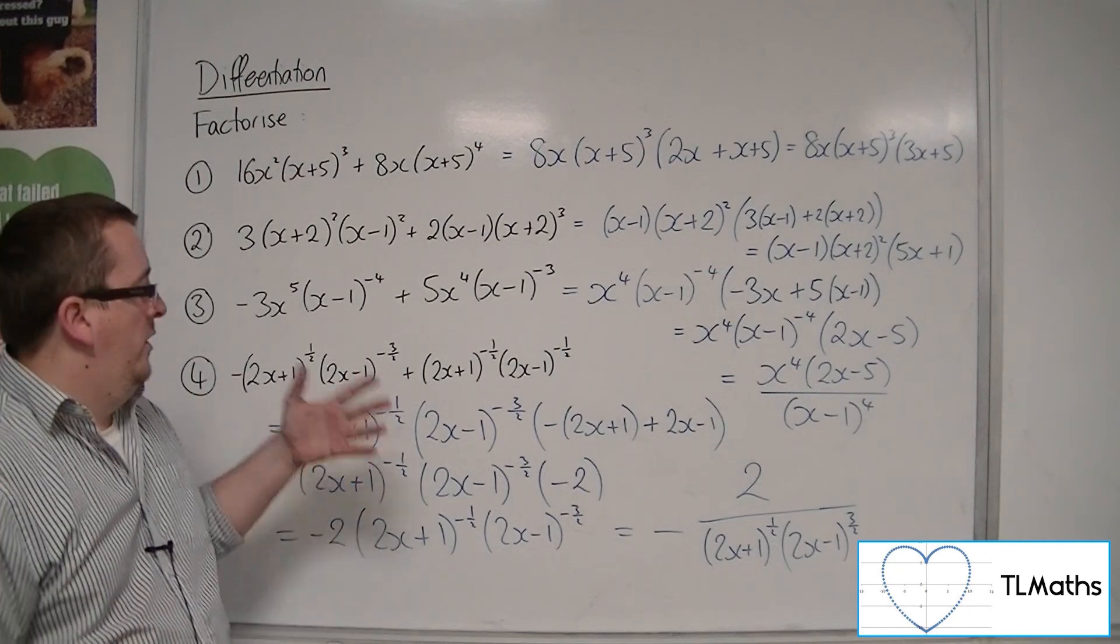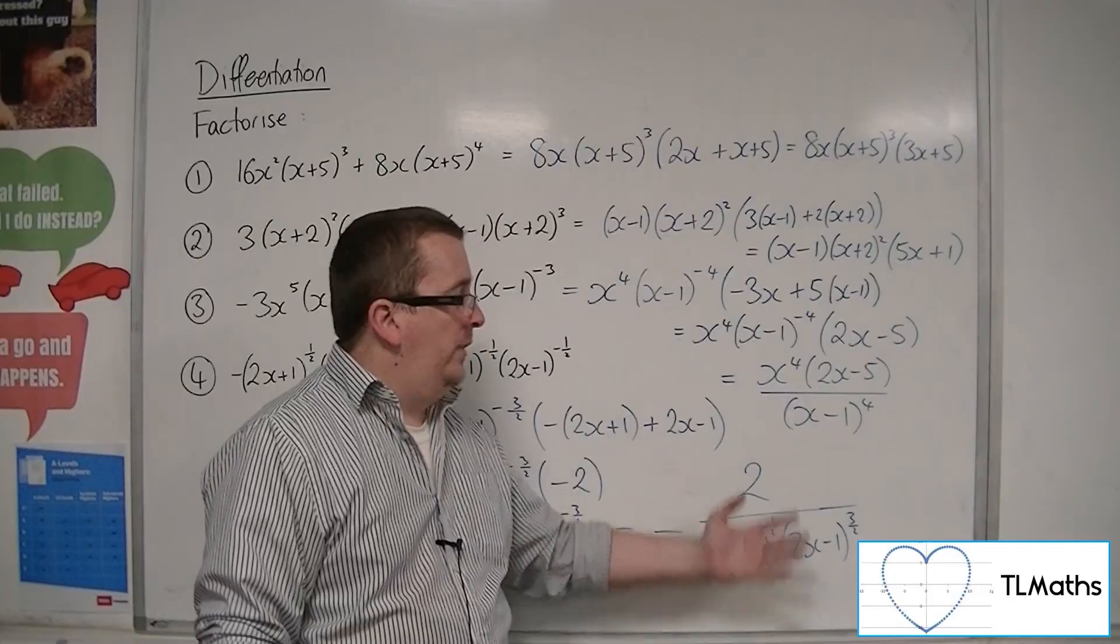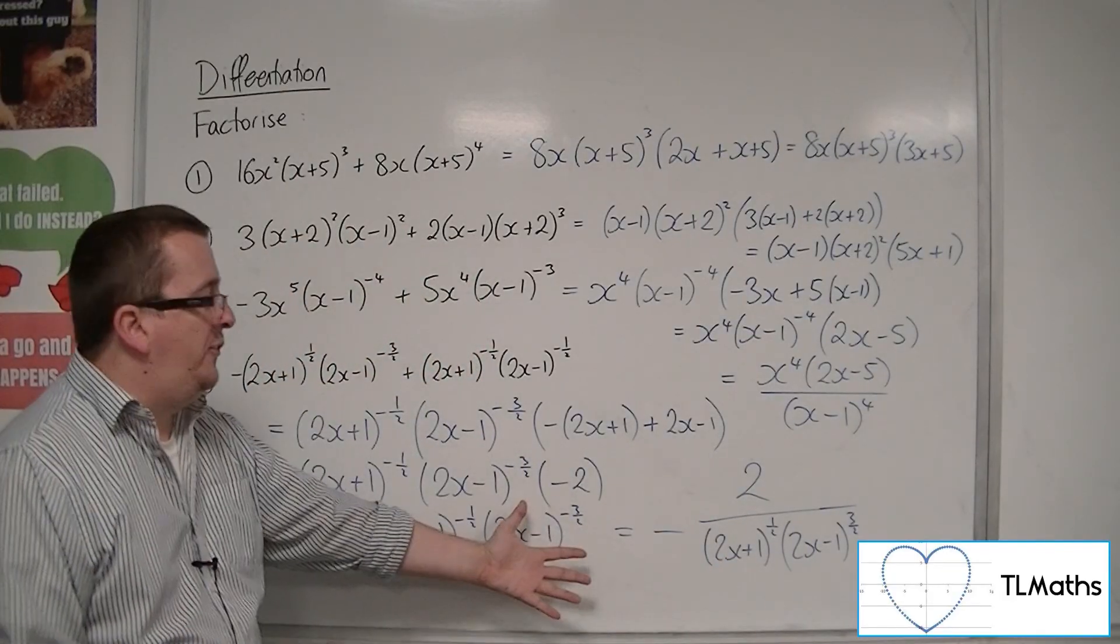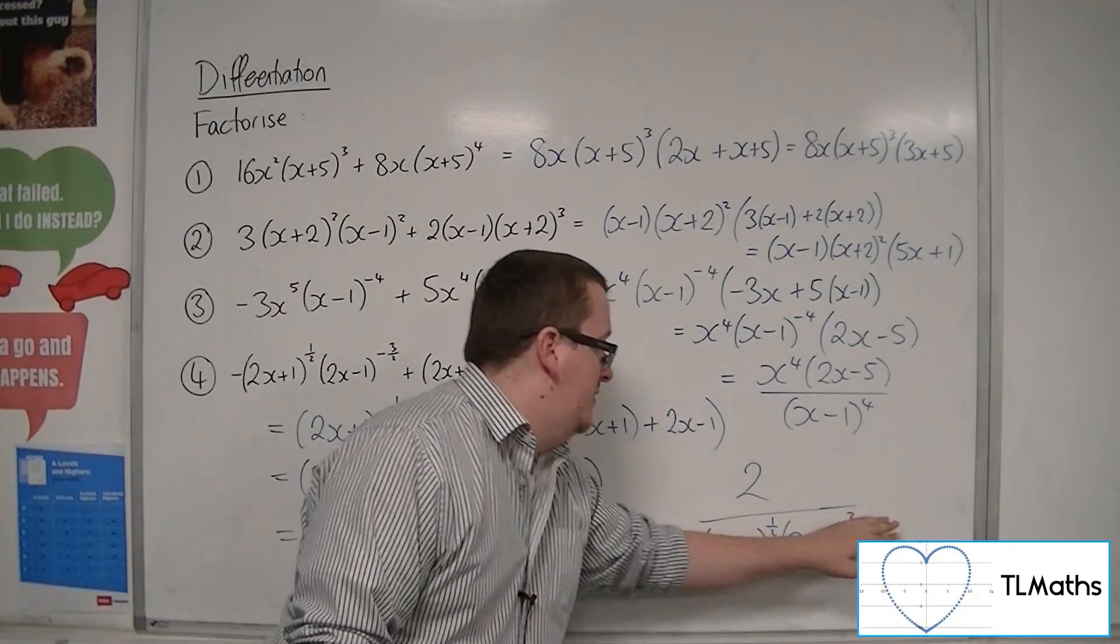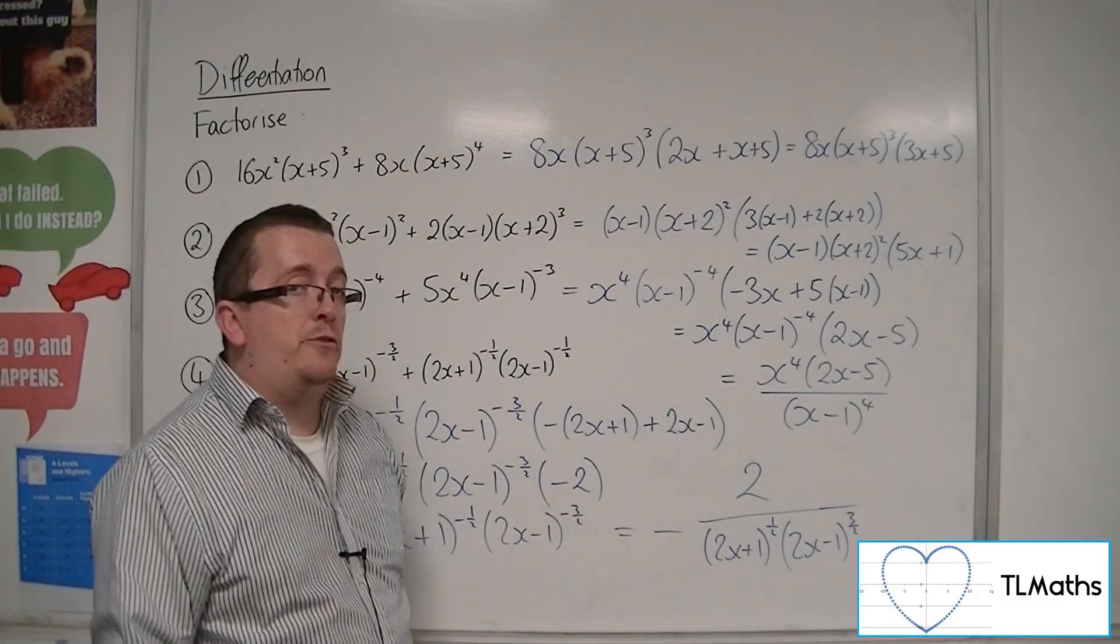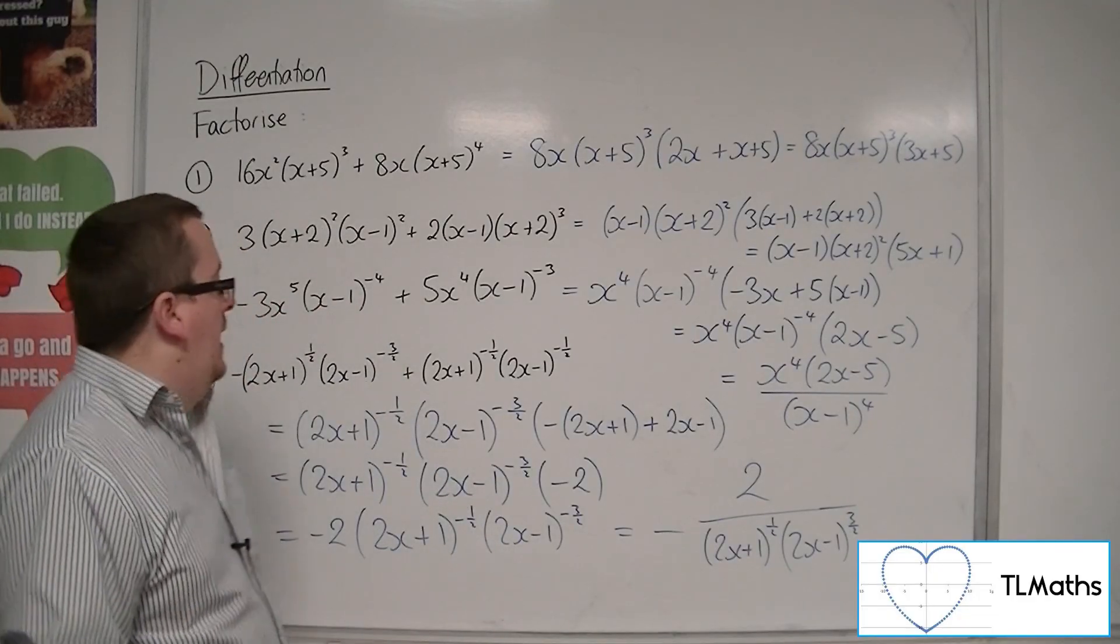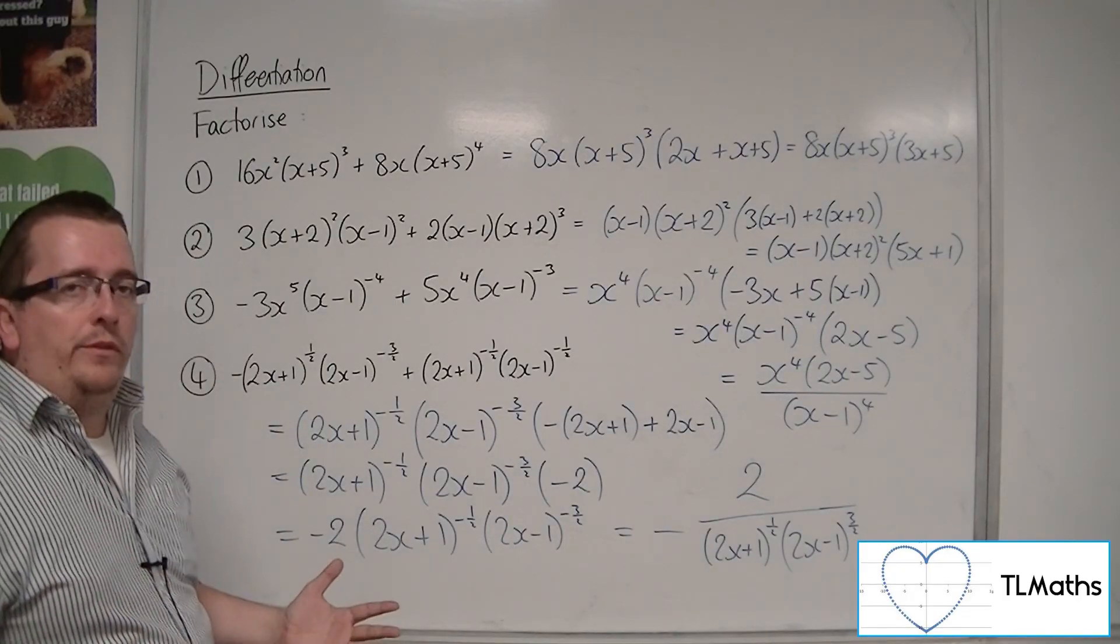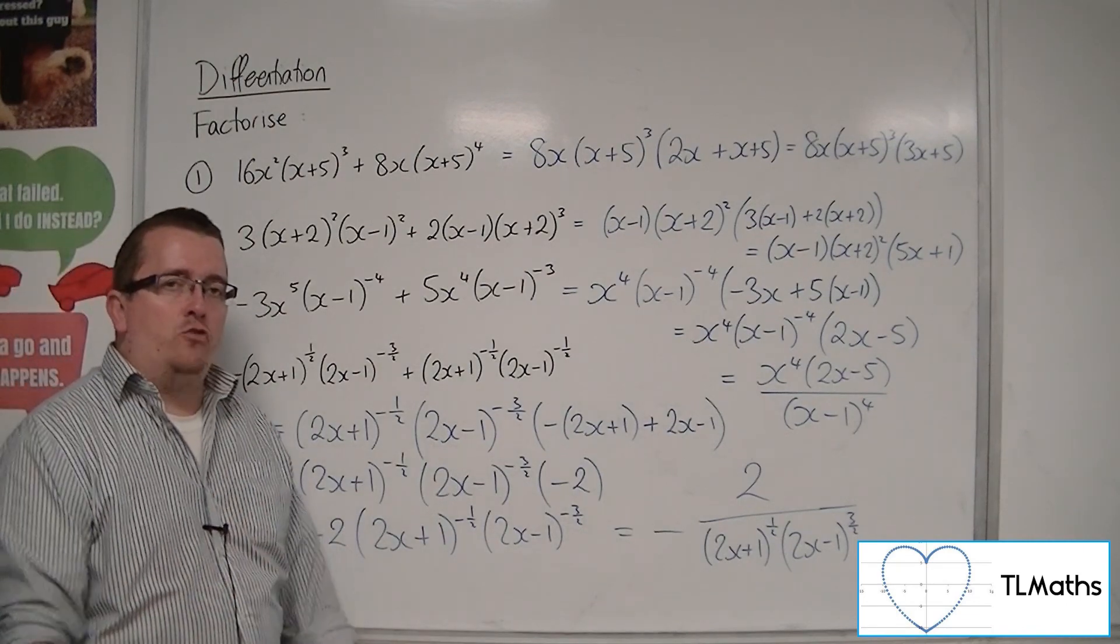So if I was then asked where the stationary points are, well fractions as we learnt up there can only be 0 when the numerator is 0. So that denominator can be ignored. And -2 can never be 0, so this has no stationary points. So whatever the original curve was, it didn't have any stationary points. So this is how we deal with more complicated factorizing.